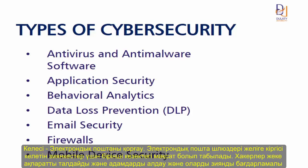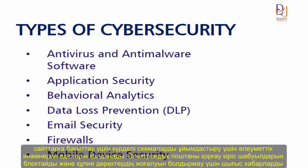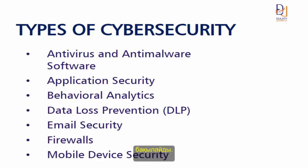Next is email security. Email gateways are the number one attack vector for security breaches. Attackers use personal information and social engineering tactics to craft phishing campaigns, directing victims to sites serving up malware. An email security application blocks incoming attacks and controls outbound messages to prevent the loss of sensitive data.